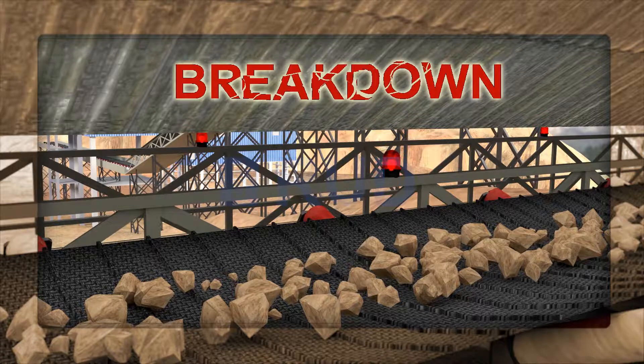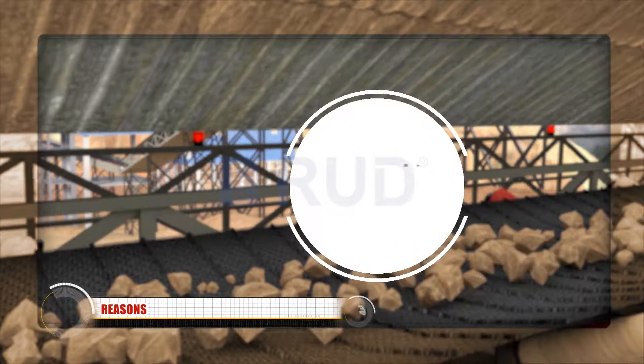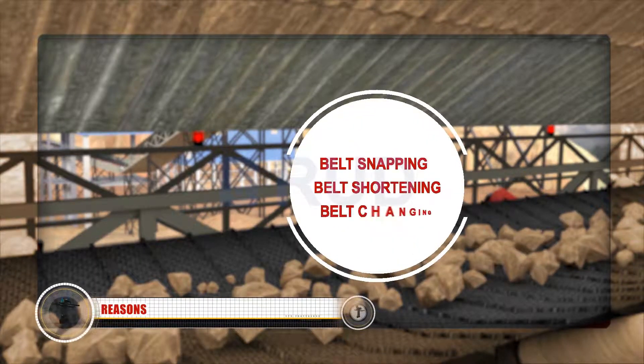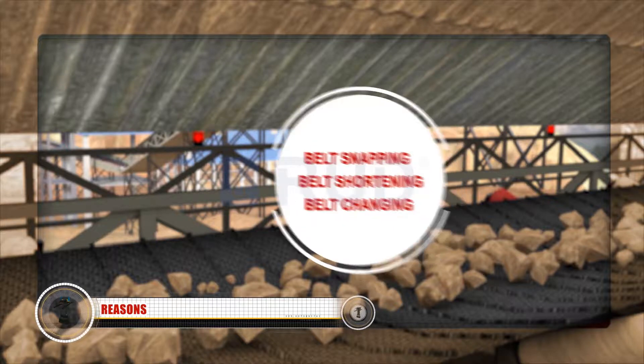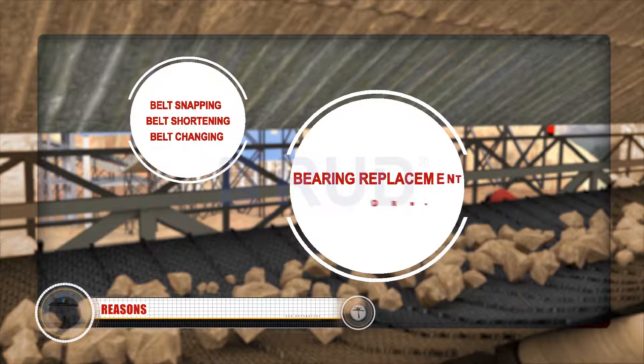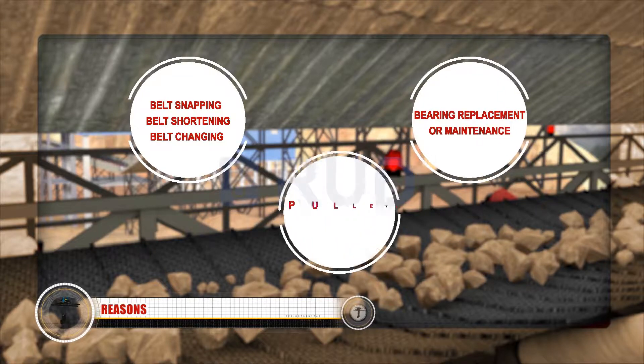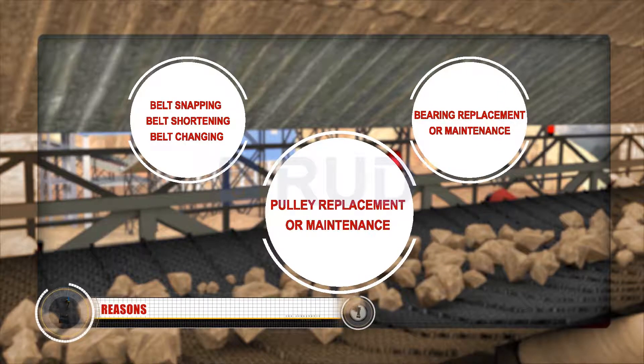Breakdown can happen due to many reasons such as belt snapping, belt shorting, belt changing, bearing replacement or maintenance, and pulley replacement or maintenance.